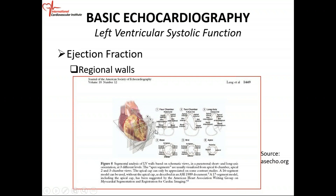If you just cut off the cap, it's the apical cap. This is your two-chamber view. All of this is your inferior wall; this is the anterior wall. Closest to the mitral valve, you have the basal anterior wall, the mid, and the apical. This is the inferior wall — your basal, mid, and apical.